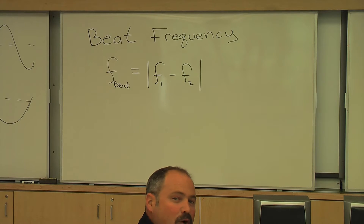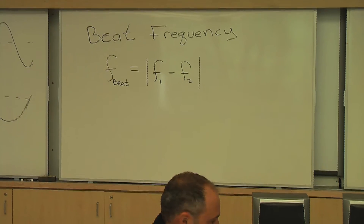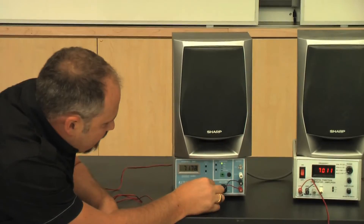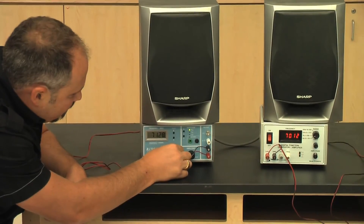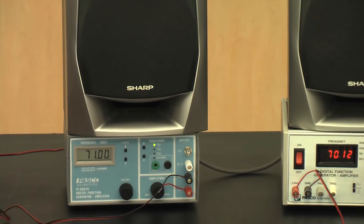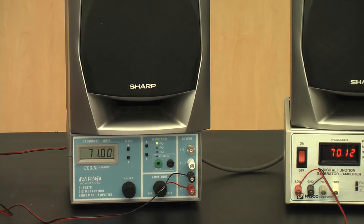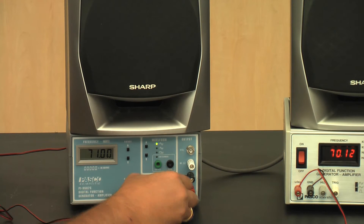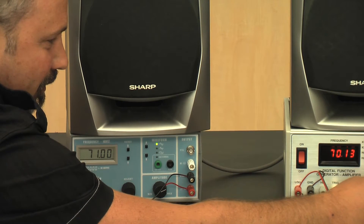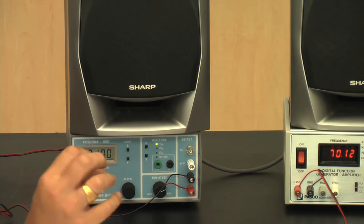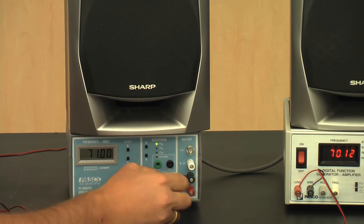Now, if I want to reduce the frequency, I make them closer together. So let's go down to 71 hertz here, and it should make it longer. Smaller frequency, larger period — wah, wah, wah. It's definitely about once a second now. Let me turn it up so you guys can hear it at home. There we go.